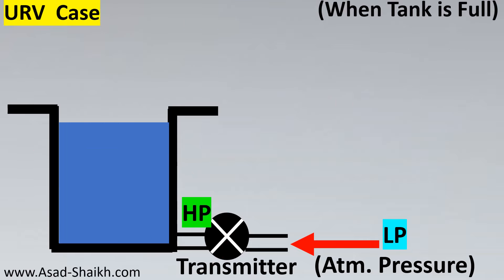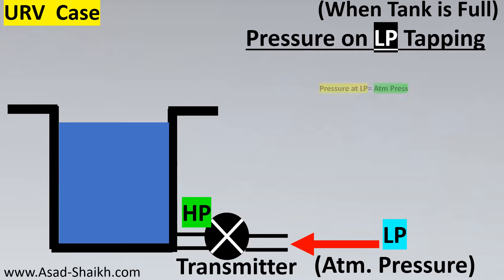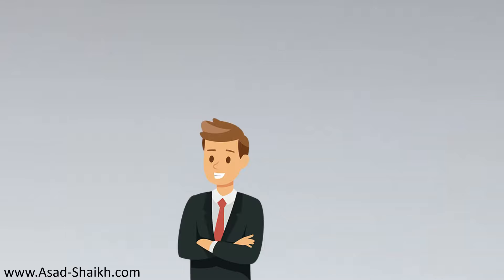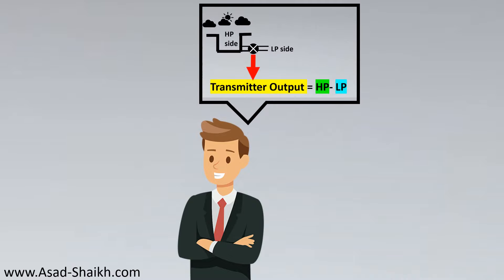When the tank is full, the pressure at the LP side is simply atmospheric pressure, because it is kept open to atmosphere. Had it been a closed tank, the pressure above the tank would act on the LP side, allowing it to nullify with the HP side. Since the transmitter output is HP minus LP, we subtract the two: atmospheric pressure cancels out, giving a final output of 500 inches of H2O when the tank is full.